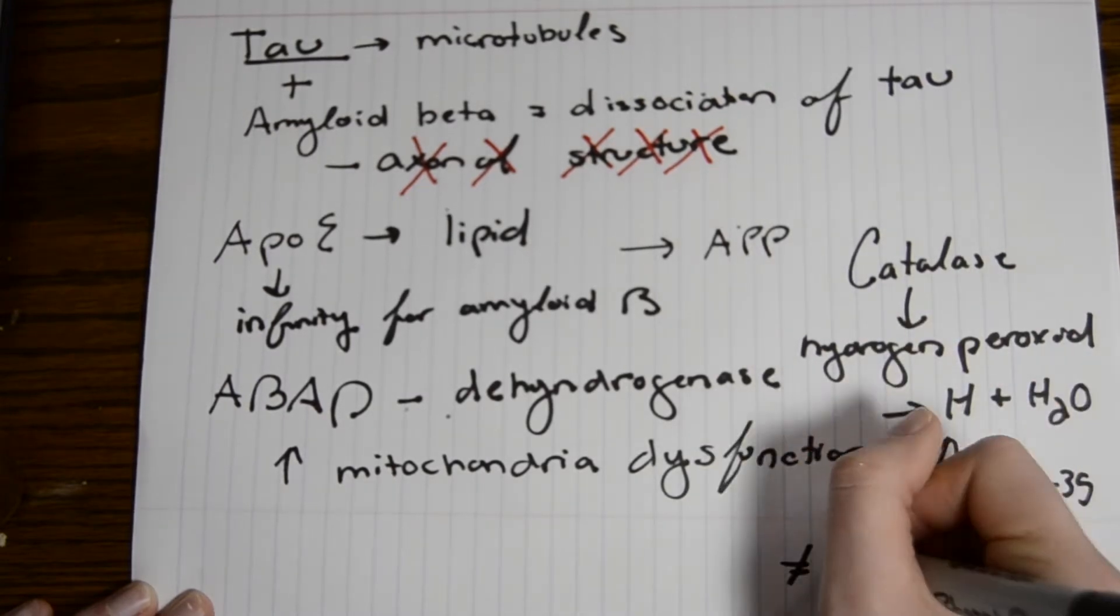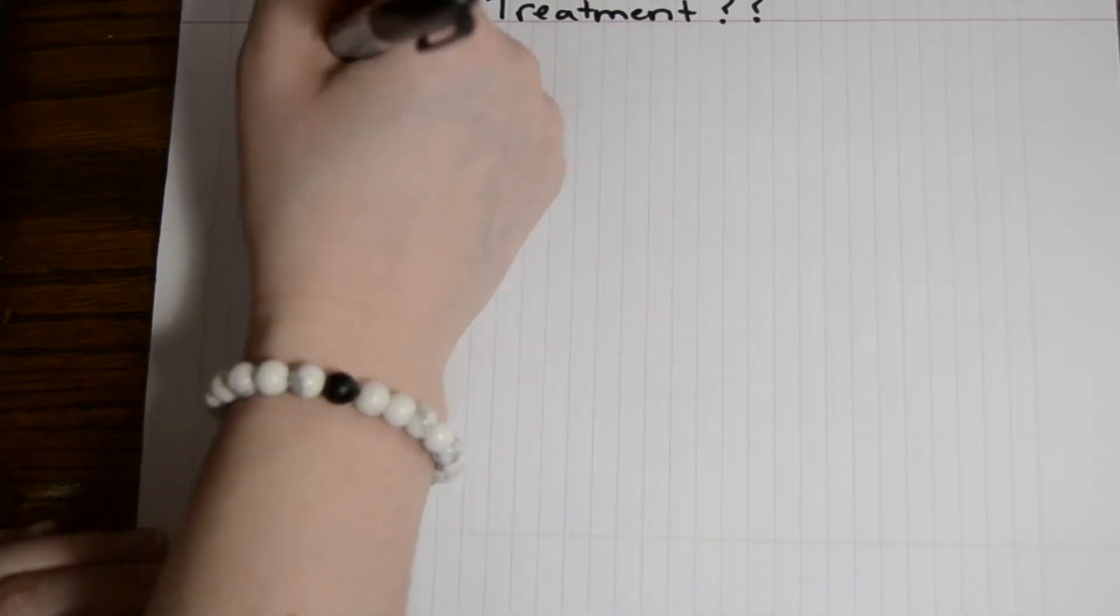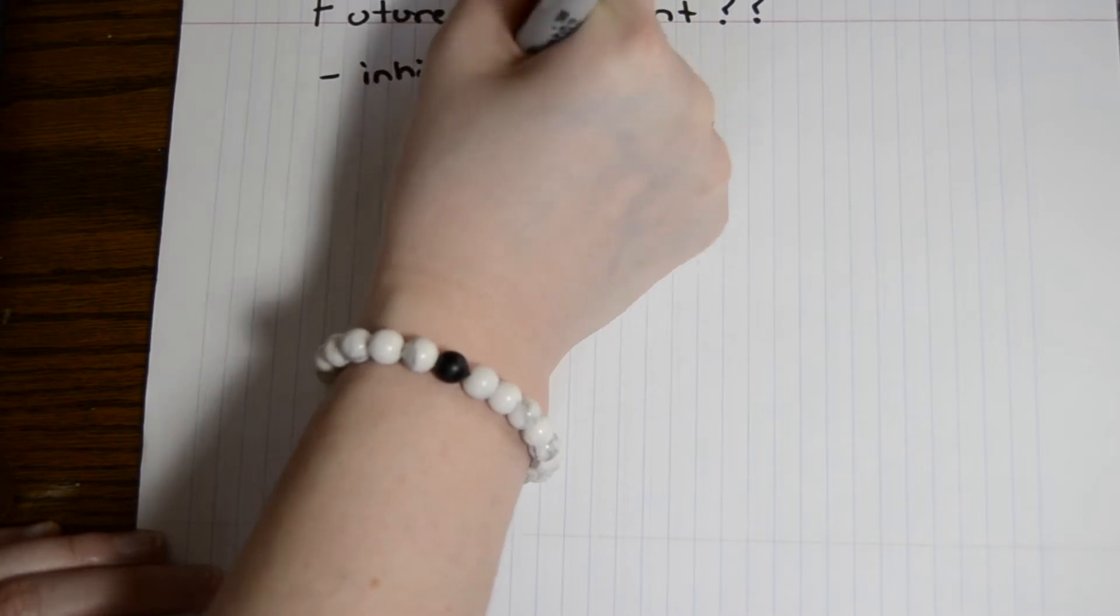Finally, this causes extra buildup of hydrogen peroxide. All these things are very important to know when looking for future treatments for Alzheimer's disease.